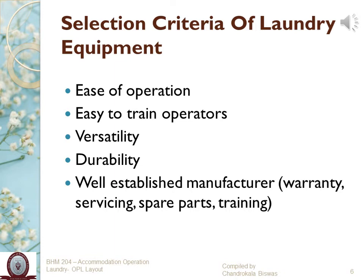After finalizing the location and size, let's quickly make a list of selection criteria we must keep in mind when it comes to choosing laundry machines and equipment. The first point to consider is ease of operation. Who wants a machine that is very complicated? If it is too complicated to use, you need to send your staff for training as well. If it is easy to operate your machines, you will not only save on labor cost but also on training costs.